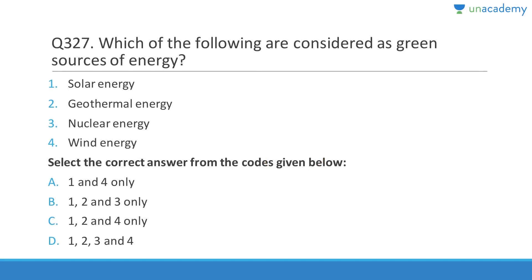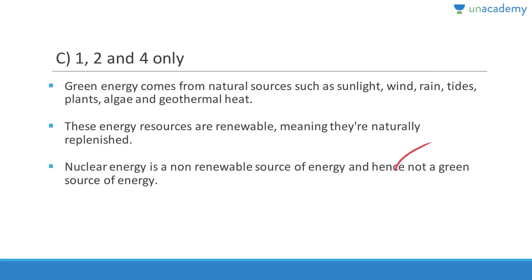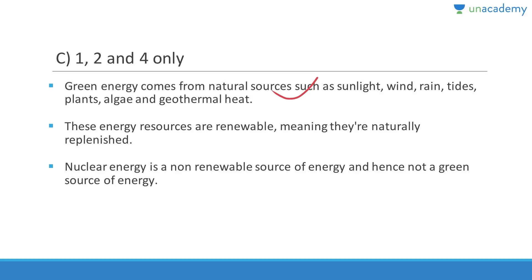Question 327: Green sources of energy include solar energy, geothermal energy, and wind energy — but nuclear energy is NOT a green source. Answer is C (1,2,4). Green energy comes from natural renewable sources: sunlight, wind, rain, tides, plants, algae, and geothermal heat. Since nuclear energy is non-renewable, it is not considered green energy.